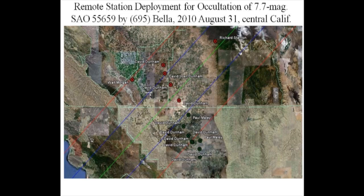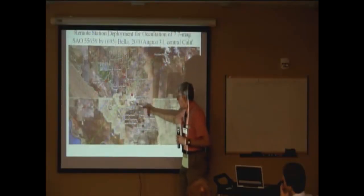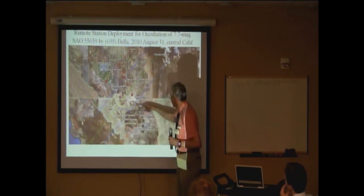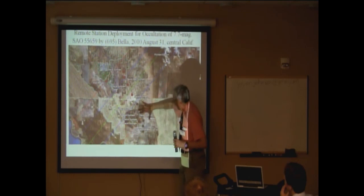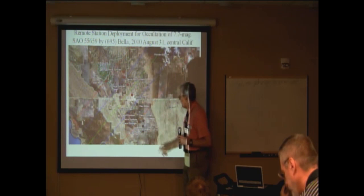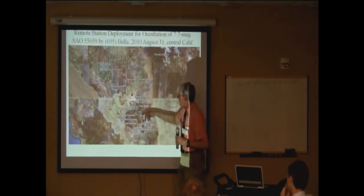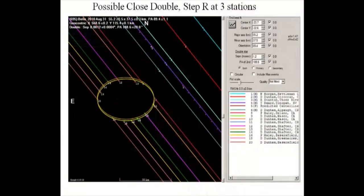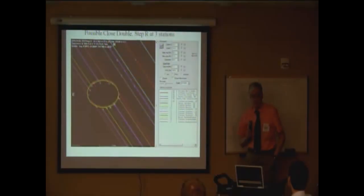We have a number of other events — I'll mention one with a 7.7 magnitude star by the asteroid Bella that we observed on August 31st, where Joan and I were able to deploy 10 stations across central California. There was an uncertainty in the path; the predicted path moved down from the original estimate, but all the positive stations recorded it. Five of my stations recorded it and four got a miss. This shows the profile of the asteroid determined, with a possible close double — step reappearances were recorded at three of the stations. In 2003, I came over here to Maui to observe another occultation of a 6th magnitude star, which was also determined to be a close double star, published in JDSO in an article by David Harreld summarizing all of the observations.